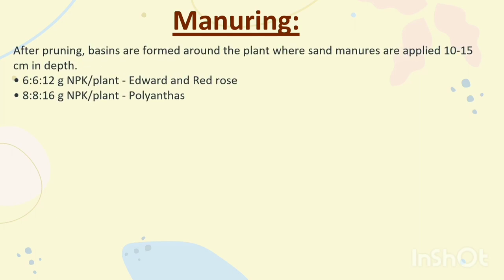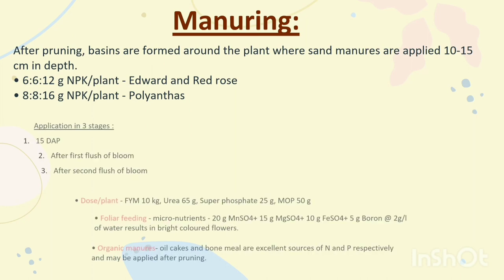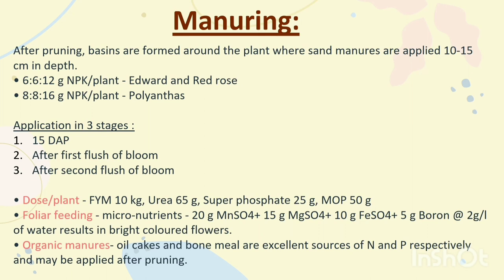Manuring. After pruning, basins are formed around the plant where organic manures are applied 10–15 cm in depth. NPK: 6-6-12 g per plant for standard and red rose; 8-8-16 g per plant for polyanthas. Application is done in 3 stages: first at 15 DAP, second after first flush of bloom, third after second flush of bloom. Dose per plant: FIM 10 kg, Urea 65 g, Superphosphate 25 g, MOP 50 g. Foliar feeding: micronutrient mix of MnSO₄ 20 g + MgSO₄ 15 g + FeSO₄ 10 g + Boron 5 g added at 2 g per litre of water, which results in brightly coloured flowers. Organic manures: oil cakes and bone meal are excellent sources of nitrogen and phosphorus respectively and may be applied after pruning.